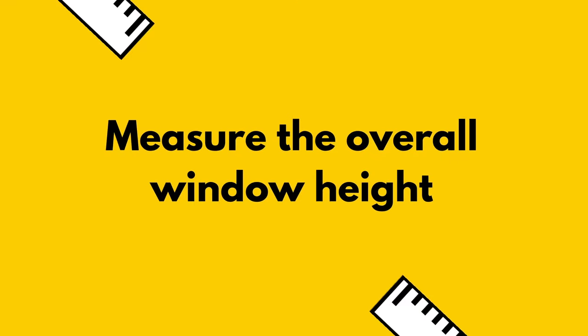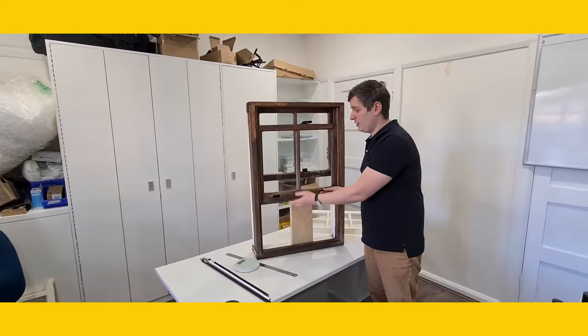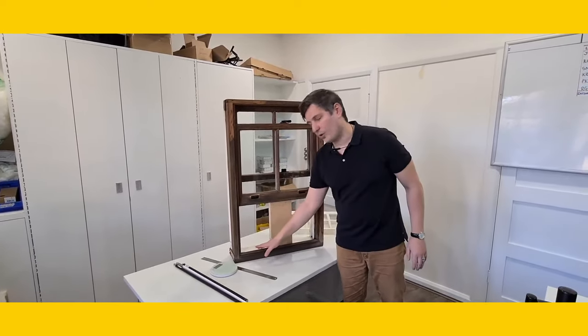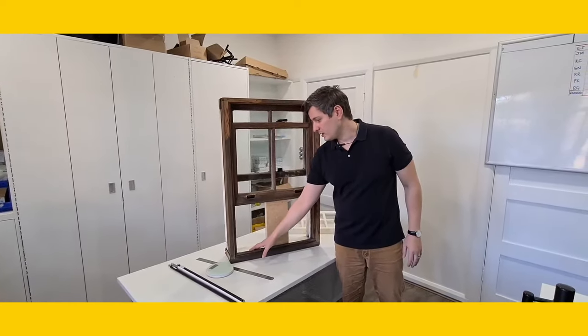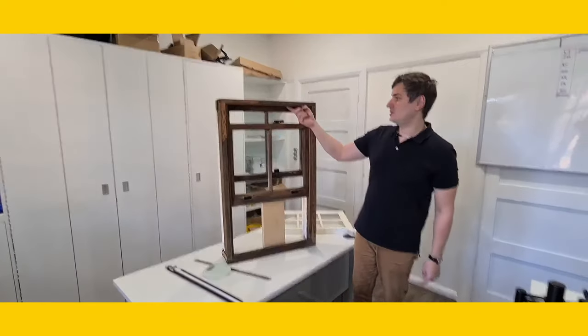If you don't have an existing sash balance to measure, you can always measure the overall height of your window. What I like to do is open up the sash window so you can see the bottom of your window seal, which is where you want to measure from